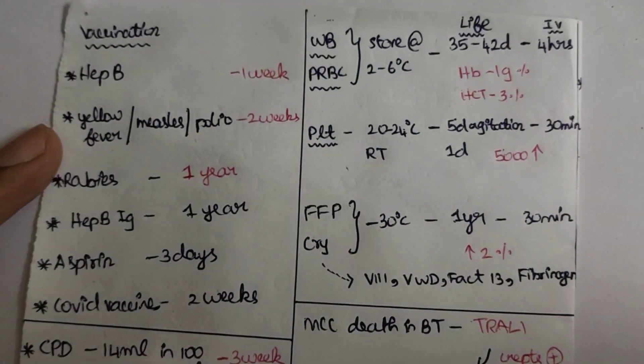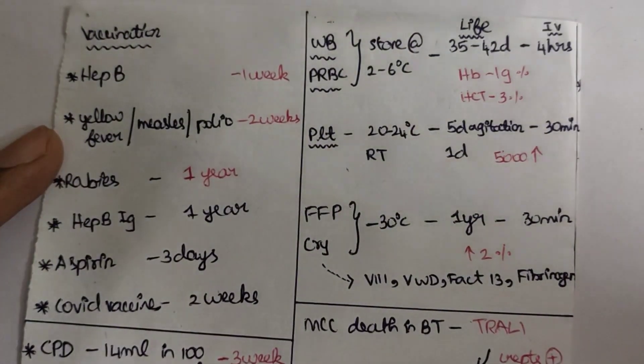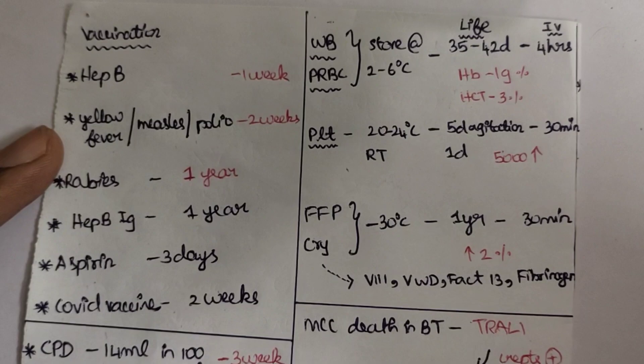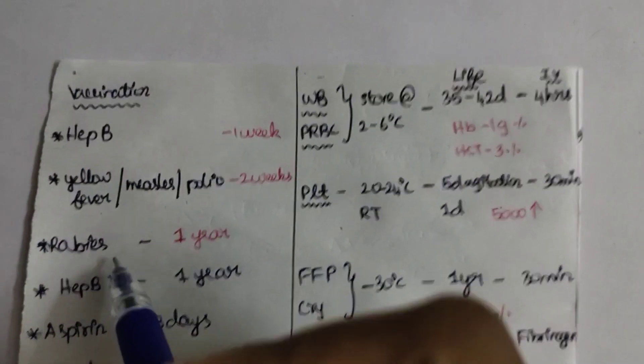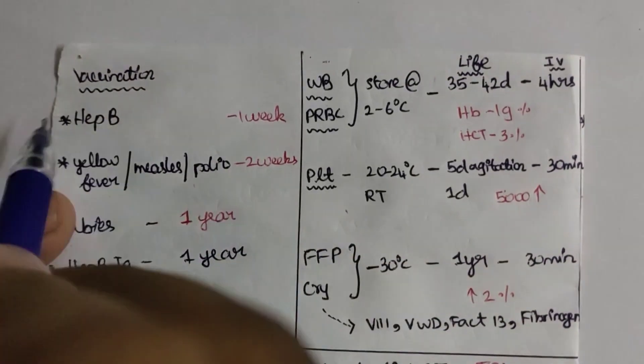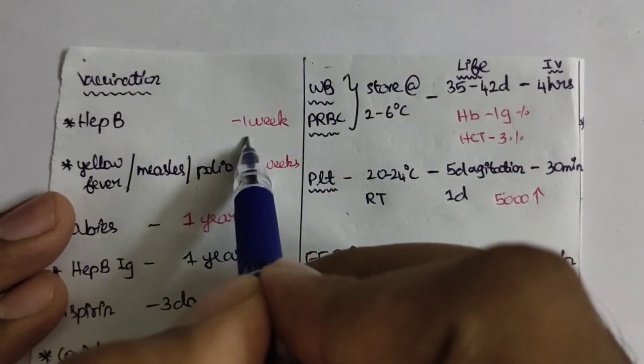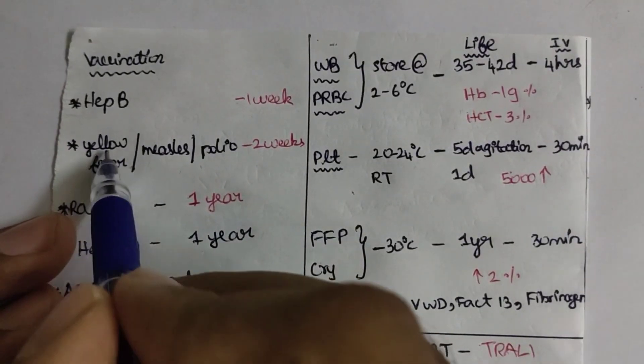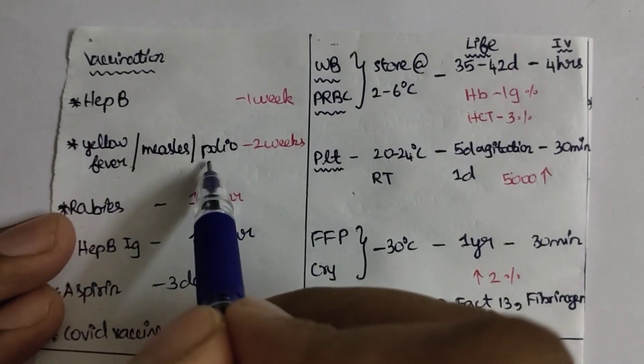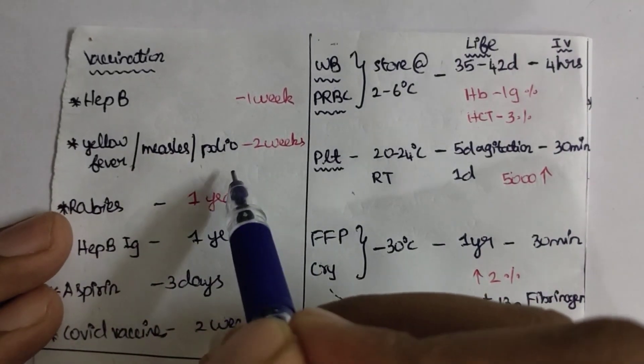First, I will answer a question: if a person is taking a vaccination, when can they donate blood? If that person takes the HBV vaccine, they can donate blood within one week. If a person takes yellow fever vaccine, measles vaccine, or polio vaccine, they have to wait nearly two weeks or 14 days to donate blood.